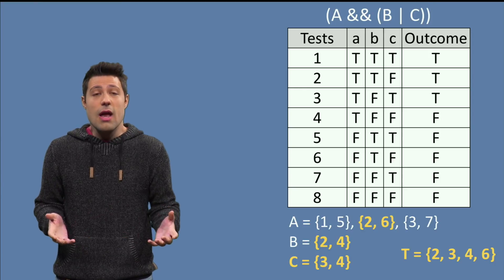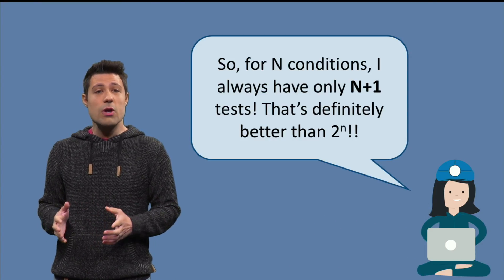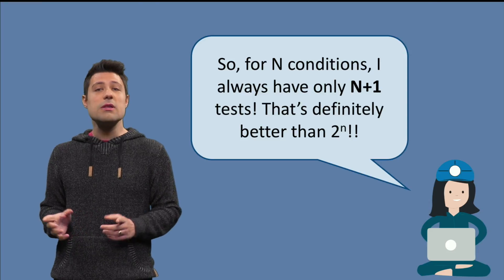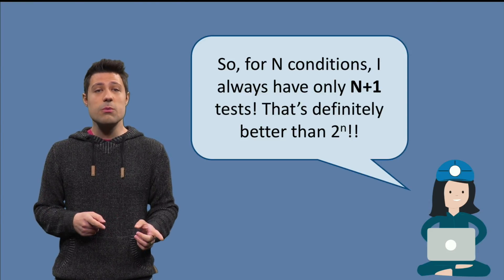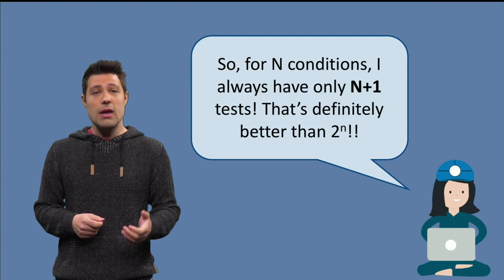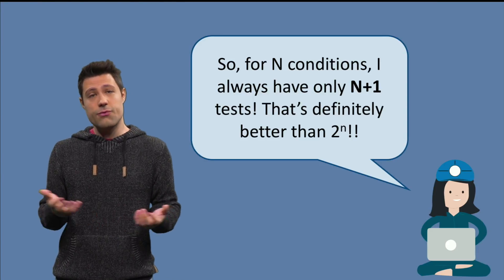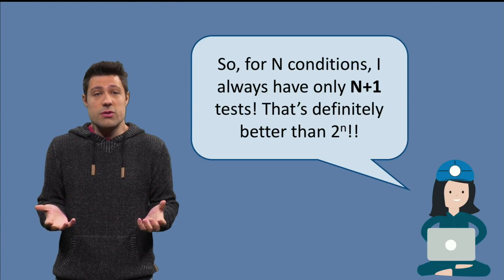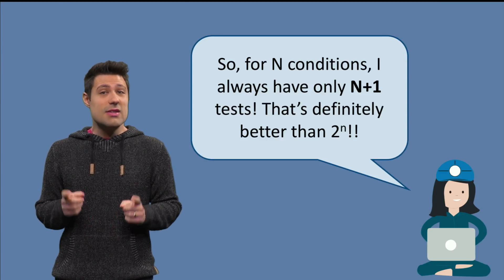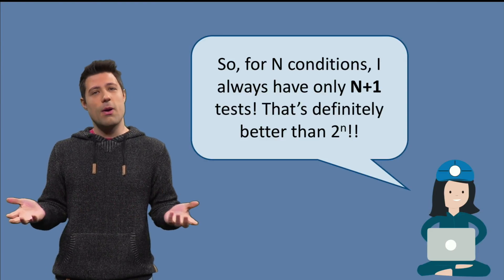And actually, I'm not going to prove here, but with MCDC, we always need only n plus 1 tests, where n is the number of conditions we have. In the example, our n was 3, after all, A, B and C, and thus the number of tests is 4. This is definitely better than 2 to the power of n.